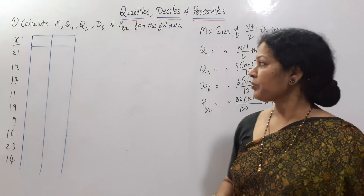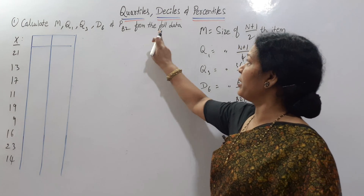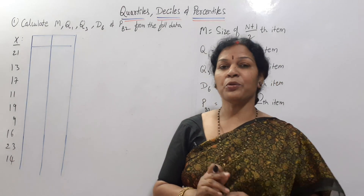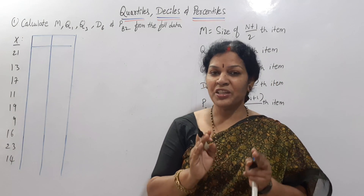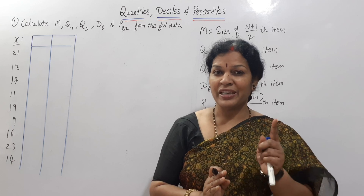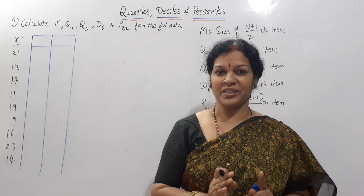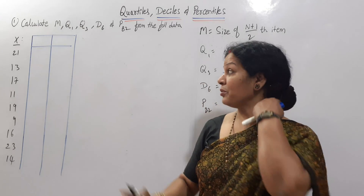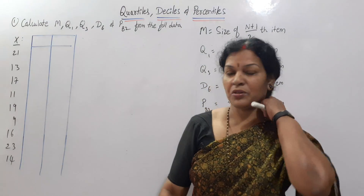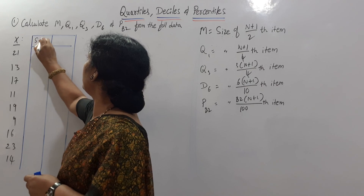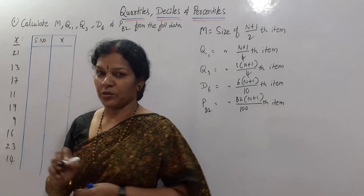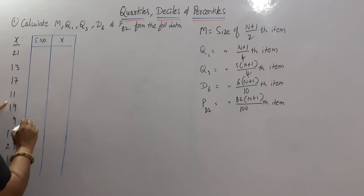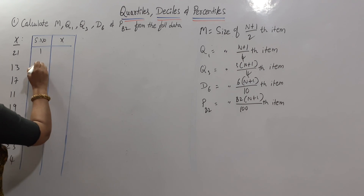Let's start the problem. The first step is to write the data in ascending order. If you don't have ascending order, then we arrange it. How many items are there? 1, 2, 3, 4, 5, 6, 7, 8, 9 — there are 9 items, so n equals 9.